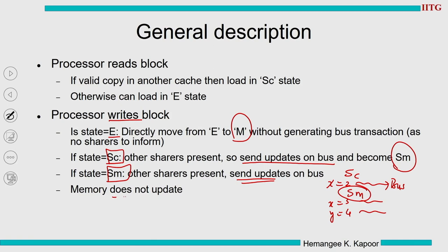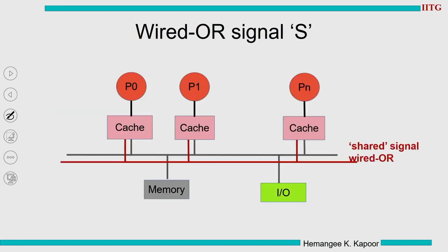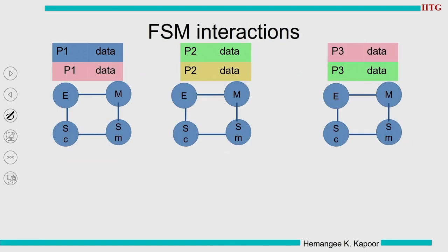Memory is not updated by any of these bus updates, which is practical because we might be sending only a few words at a time. Similar to MESI, we also need the shared wired-OR signal here because we have the E state. If any cache has the data block, it raises the signal to 1, indicating a sharer exists and we cannot go to E. If the signal is 0, we can go to E.